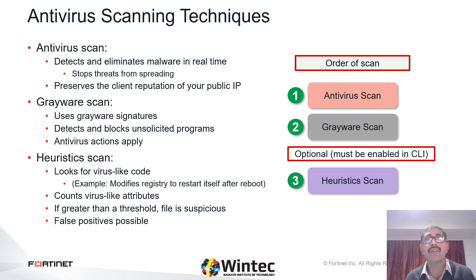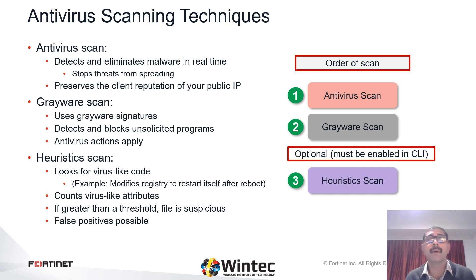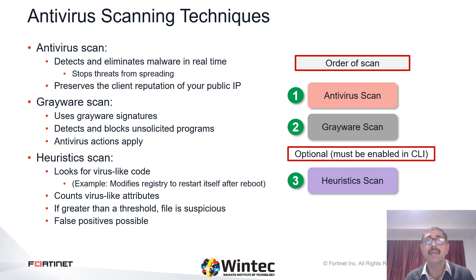You can configure the action for the heuristic scan to pass, block, or disable using the CLI command config antivirus heuristics. If all antivirus features are enabled, FortiGate applies the following scanning order: antivirus scan, grayware scan, heuristic scan. I would like you to remember this order.